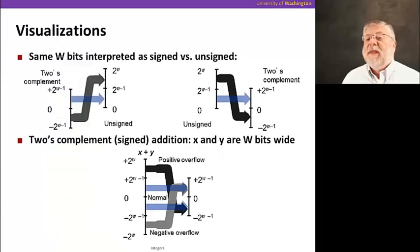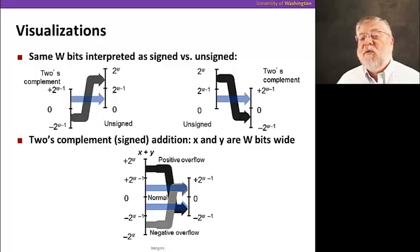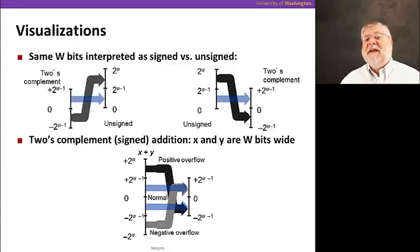Just a quick visualization of what is going on here. If we start with a two's complement number that can go from minus two to the W minus one to plus two to the W minus one, when we move it to an unsigned representation, those positive values stay the same, but the negative numbers now look like big positive values. Similarly, going in the other direction, if we start with an unsigned number, the smaller numbers move straight across to two's complement notation, but the large positive numbers — the ones that start with that leading one — get interpreted as negative numbers if we think of the representation as two's complement.